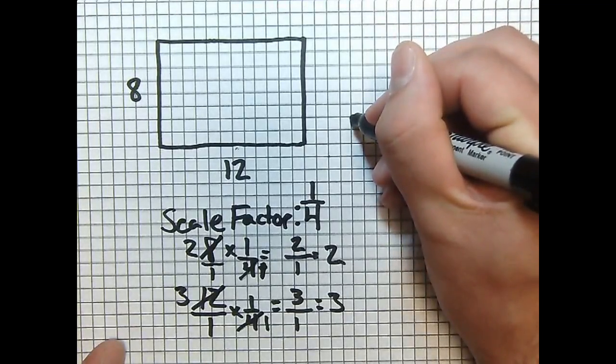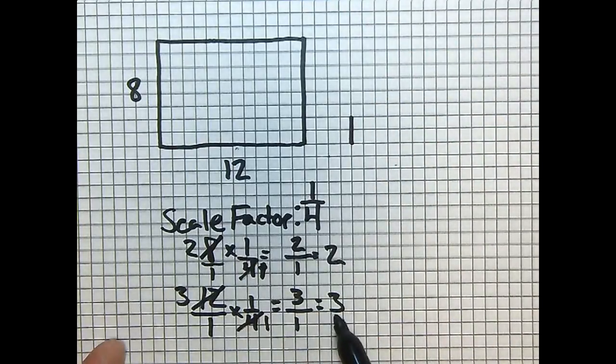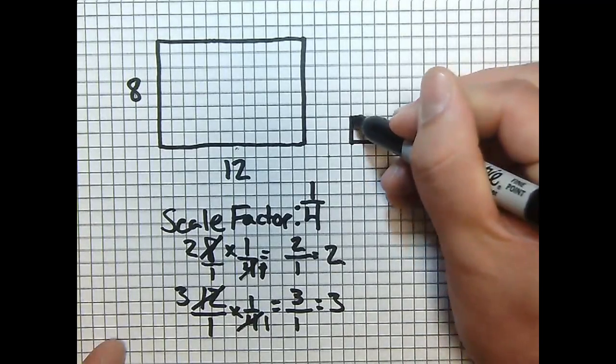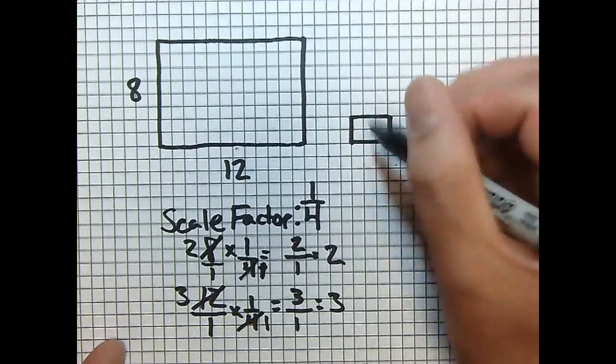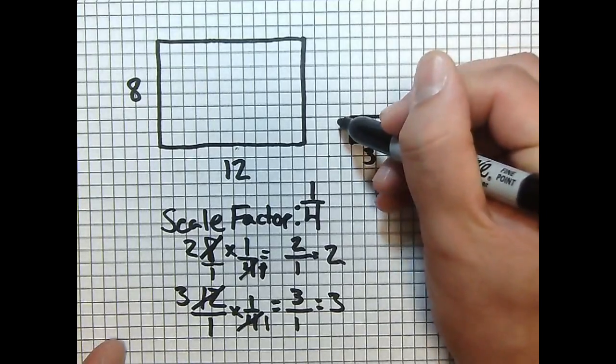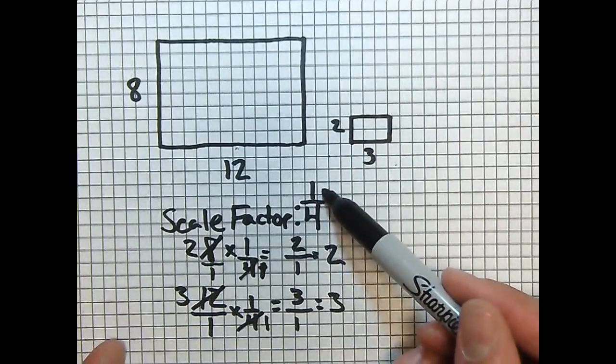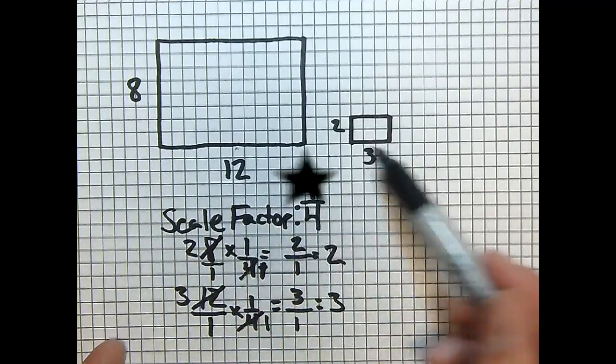So I'm going to take my 8 unit side that used to be 8 units and now it's only 2. And my 12 unit side when it was scaled with a scale factor of 1 fourth is now 3. A much smaller rectangle is formed. That's because we literally took 1 fourth or we divided each side by 4.